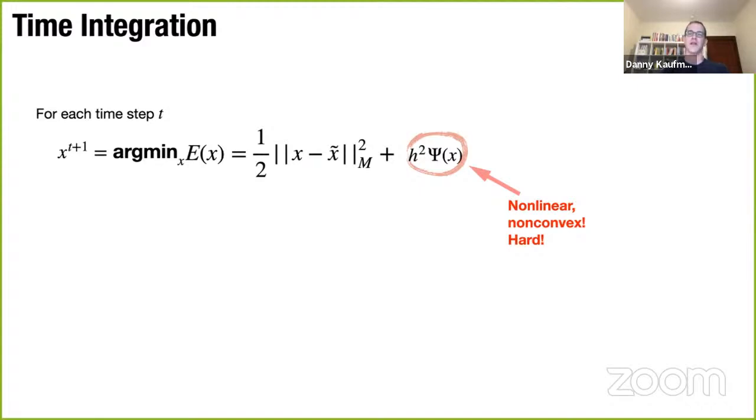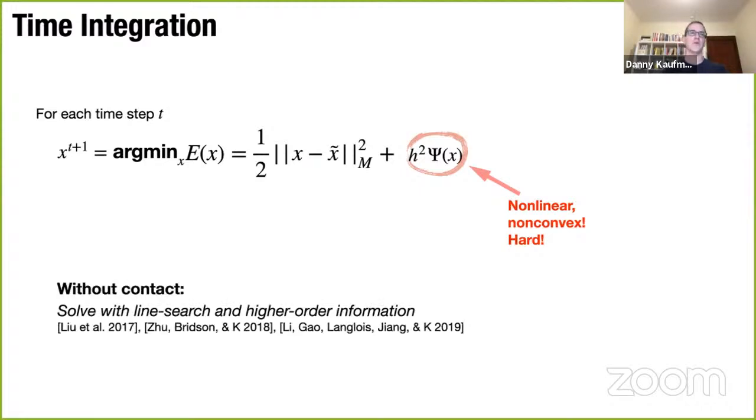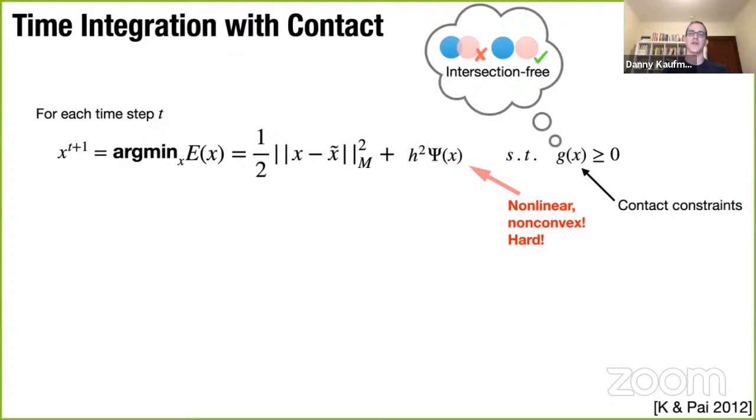So to solve this problem without contact, we and other folks have been developing custom Newton methods. And key to making them work is two things. We need line search for globalization, because we may not be very close to our solutions, and we need higher order information. So contact then adds extra inequality constraints to the system that we need to satisfy under minimization to prevent the materials from intersecting. And doing this really poses two key challenges that we have to address.